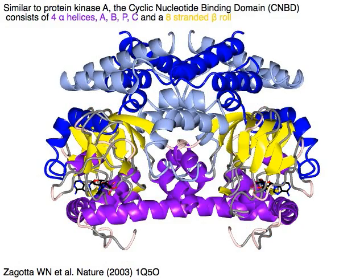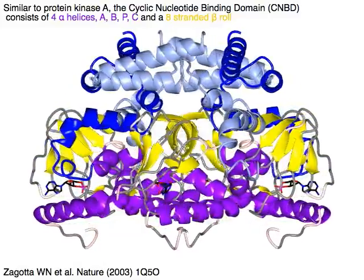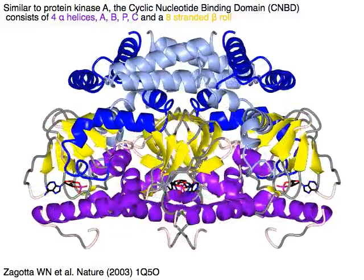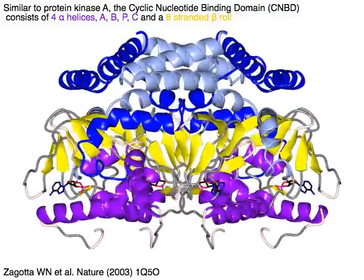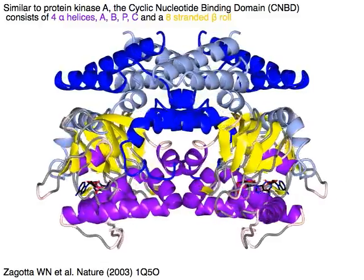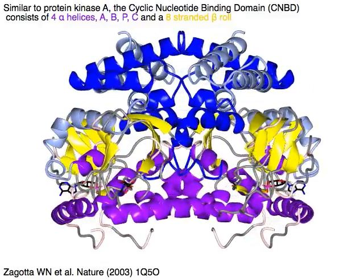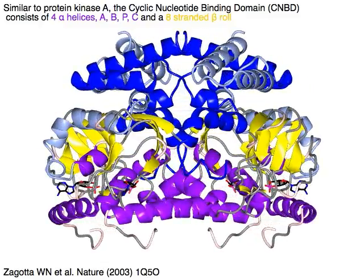Similar to protein kinase A, the cyclic nucleotide binding domain (CNBD) consists of four alpha helices — A, B, P, and C in purple — and an eight-stranded beta-roll in yellow.